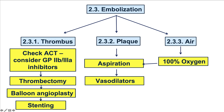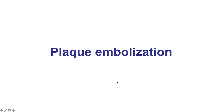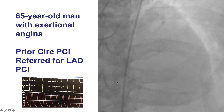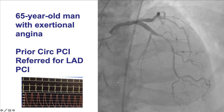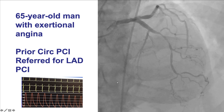If the reason for embolization is plaque, aspiration is typically done to remove any residual debris from the coronary artery, followed by vasodilator administration. We will discuss a case that illustrates these potential treatments.